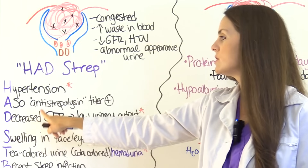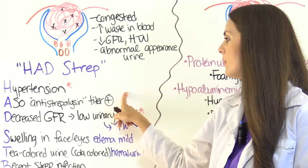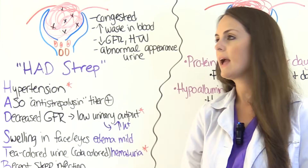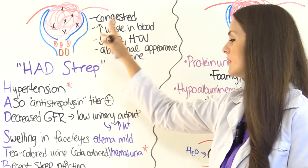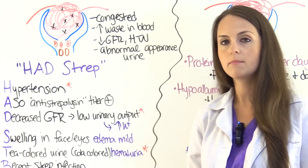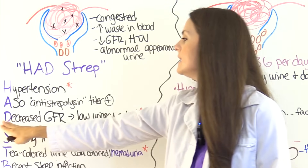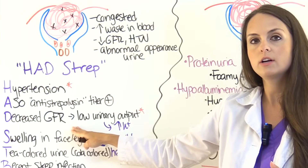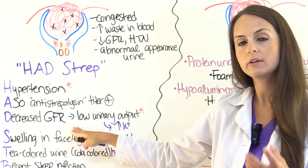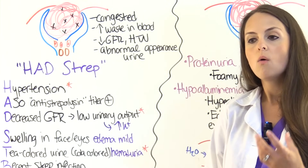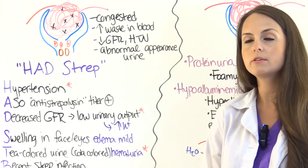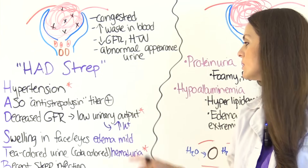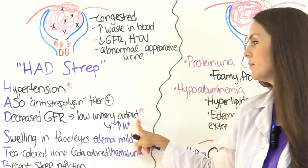A is for ASO — anti-streptolysin titer — which will be positive. This is a test used to detect strep, and if positive along with this condition, it is most likely caused by strep. D is for decreased GFR. Whenever the glomerulus has a decreased ability to filter blood, the patient will not produce as much urine as they should, so they will have low urinary output.